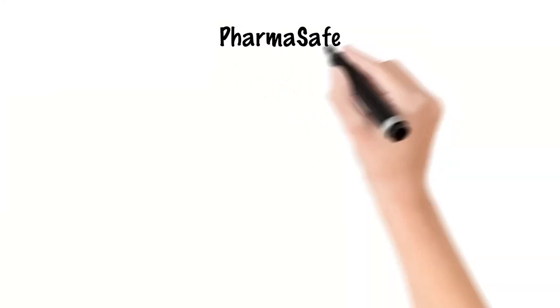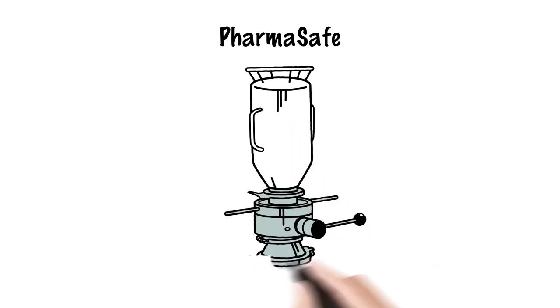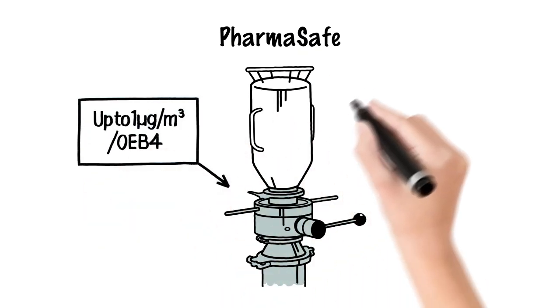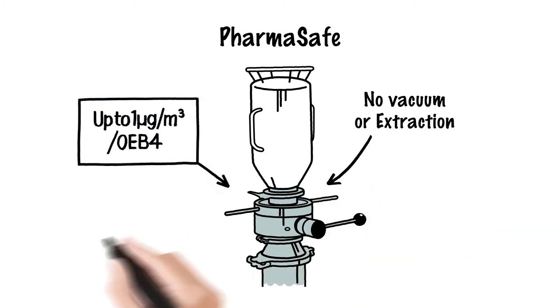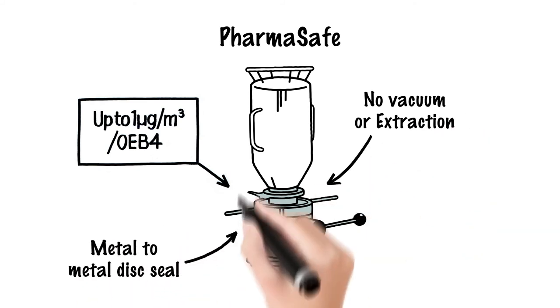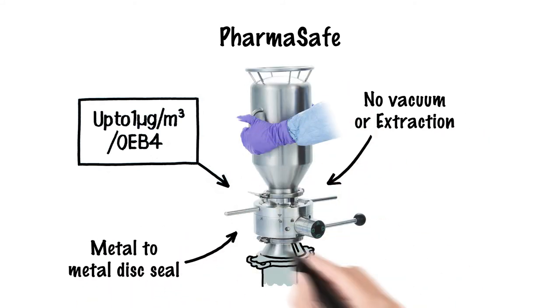The entry-level PharmaSafe offers containment performance up to 1 microgram per meter cubed with no extraction or additional disc seals required. A precision tolerance seat and direct metal to metal disc contact ensures that performance is reliable and repeatable throughout the range.